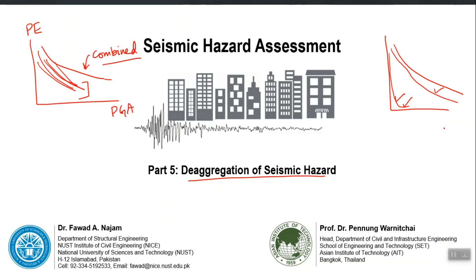Ultimately, this information will translate into the selection of the most representative earthquakes which can occur in future at my site. The faulting mechanism, the slip rate — because now I know that fault A is contributing most and fault B is contributing the least, I should focus on fault A. All characteristics of fault A should be used to select future earthquakes because it is the most likely contributor. Getting this information about the decomposition of seismic hazard is called de-aggregation, and one way to obtain it is to plot individual hazard curves for each source and the combined one and then analyze.